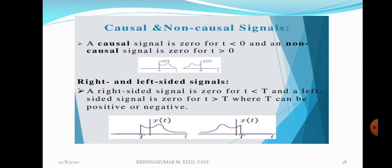Today we are going to discuss about causal and non-causal signals. Anything that carries information is known as a signal. A signal is a physical quantity which varies with time, space or any other independent variables. Signals are broadly classified into one-dimensional signal and multi-dimensional signal. If a signal depends only on one variable, it is called a one-dimensional signal. Speech signal is a one-dimensional signal.